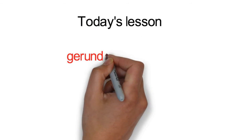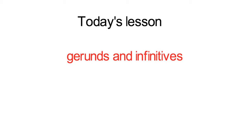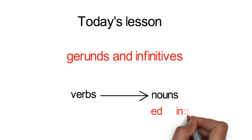Today we are going to discuss gerunds and infinitives. Gerunds and infinitives are very strange. They are words that are normally verbs but can be used as nouns and objects when -ed or -ing is added to them. We will discuss gerunds and infinitives more during today's lesson.